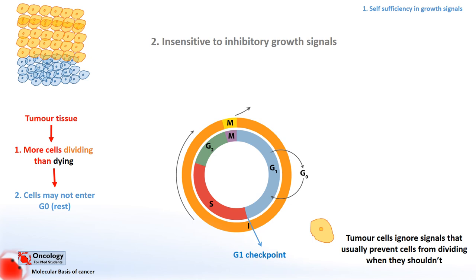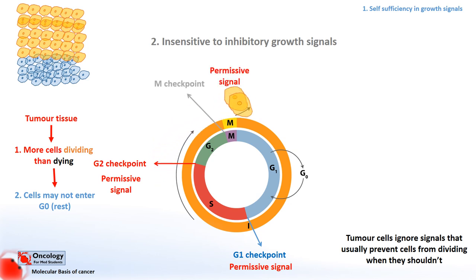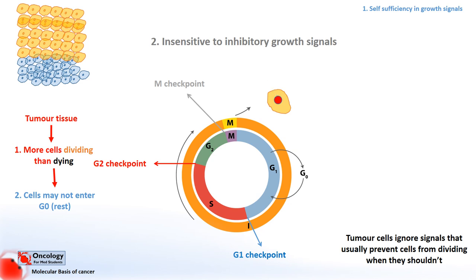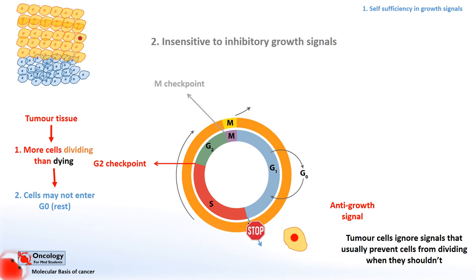To be able to move to the next stage through a checkpoint, the cell must be given the right signals. The checkpoints in the cell cycle also perform another very important function: when a cell's DNA is damaged, the checkpoints ensure that the cell does not pass through and pass its DNA onto its daughter cells. When a damaged cell reaches a checkpoint, mechanisms detect that damage and activate proteins that halt the cell at that checkpoint. Because their function is to stop mutated cells dividing and growing into tumours, the genes that code for these proteins are known as tumour suppressor genes.